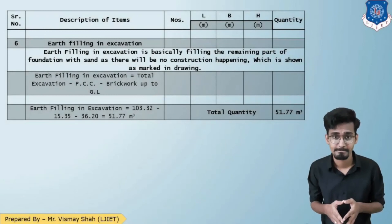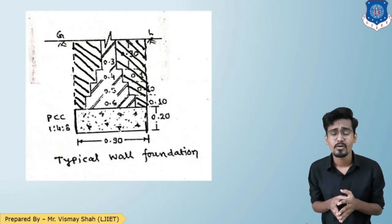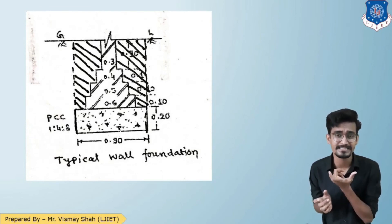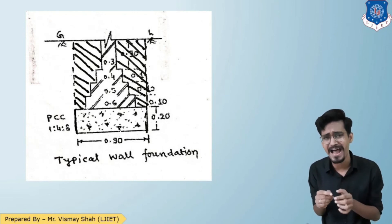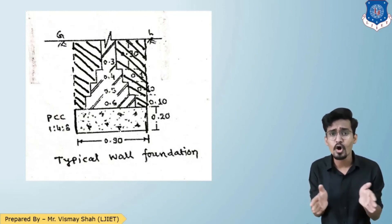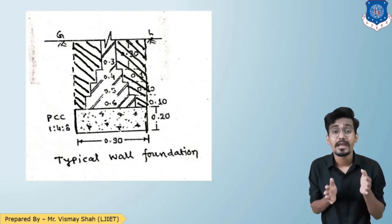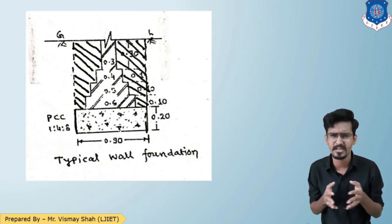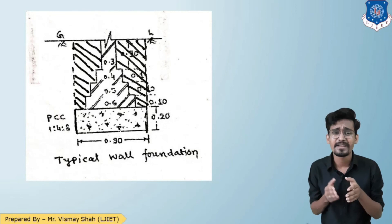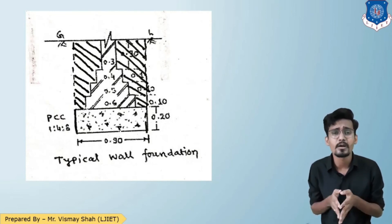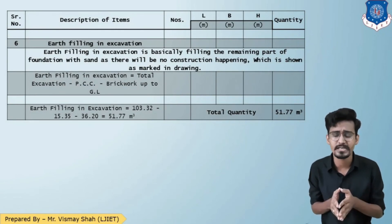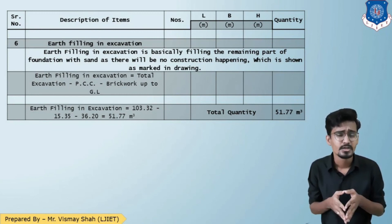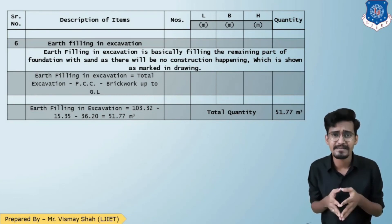The last quantity is earth filling in excavation. In the foundation, the base is 0.9 m PCC, above which are brick footing steps of 0.6, 0.5, 0.4, and 0.3 m width. The remaining hatched space is filled with sand. The formula is: earth filling = total excavation − PCC quantity − brickwork up to ground level. This gives approximately 51.77 cubic meters.